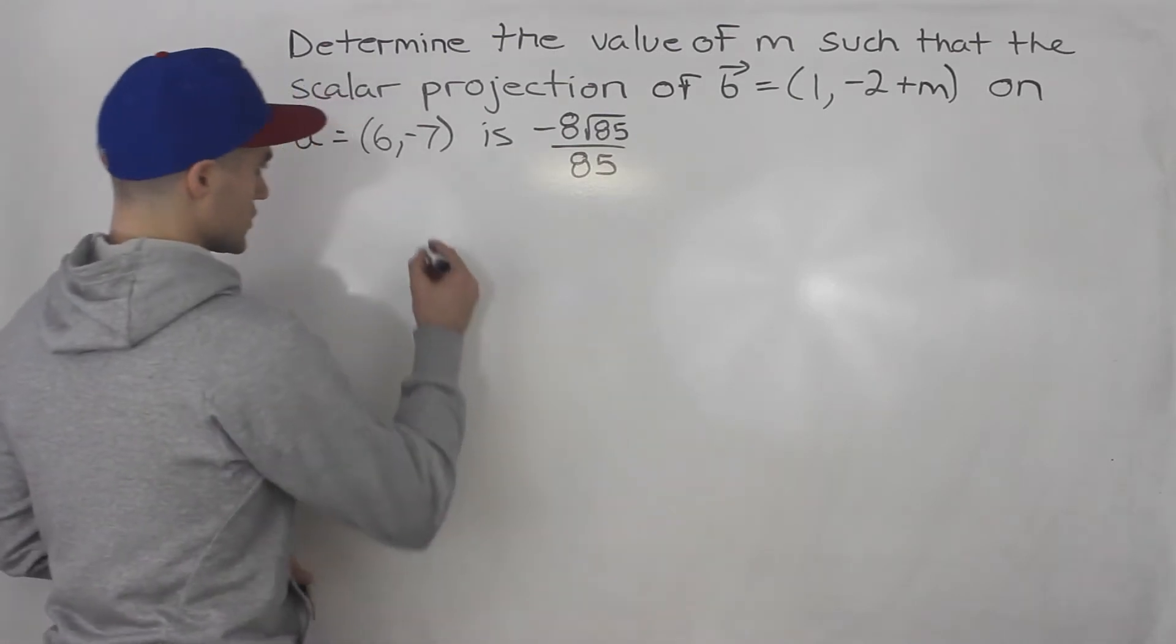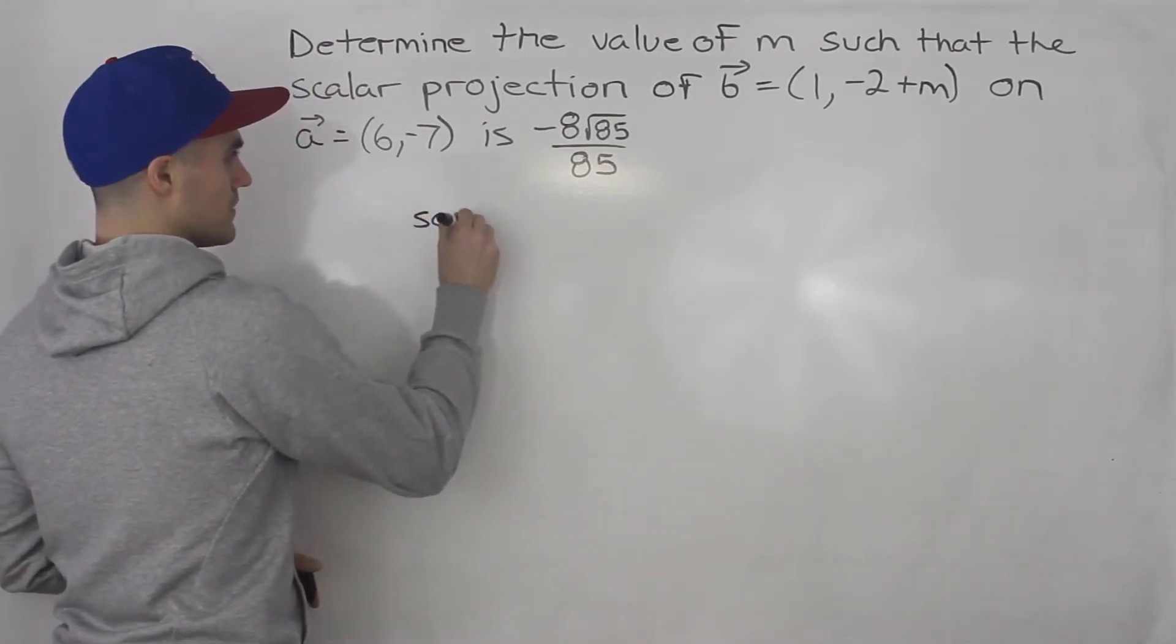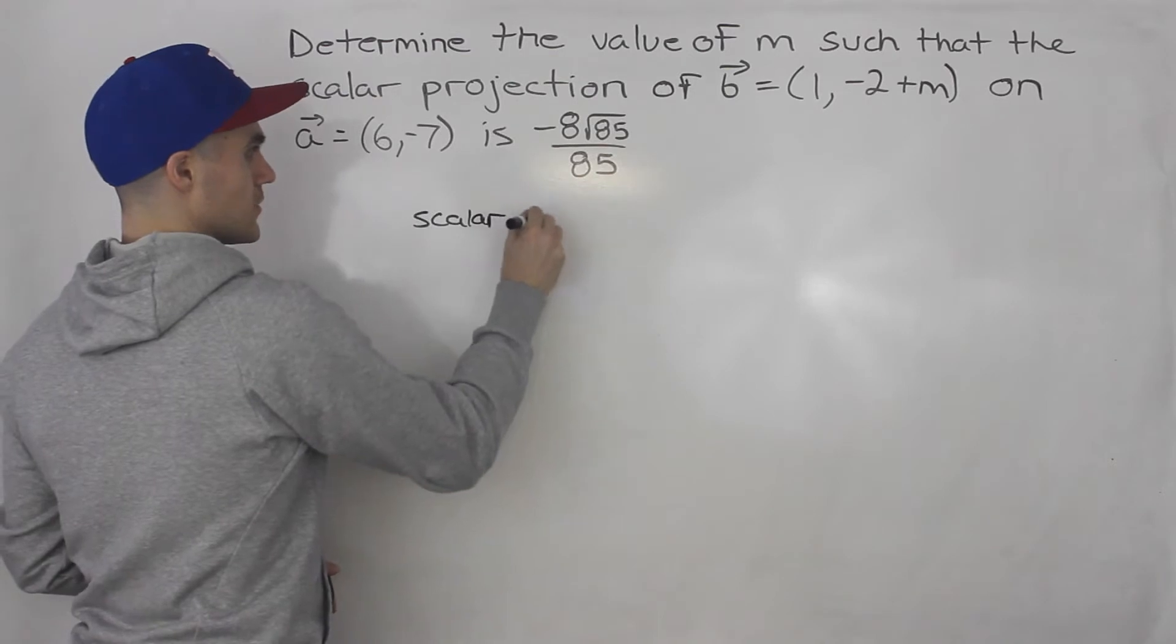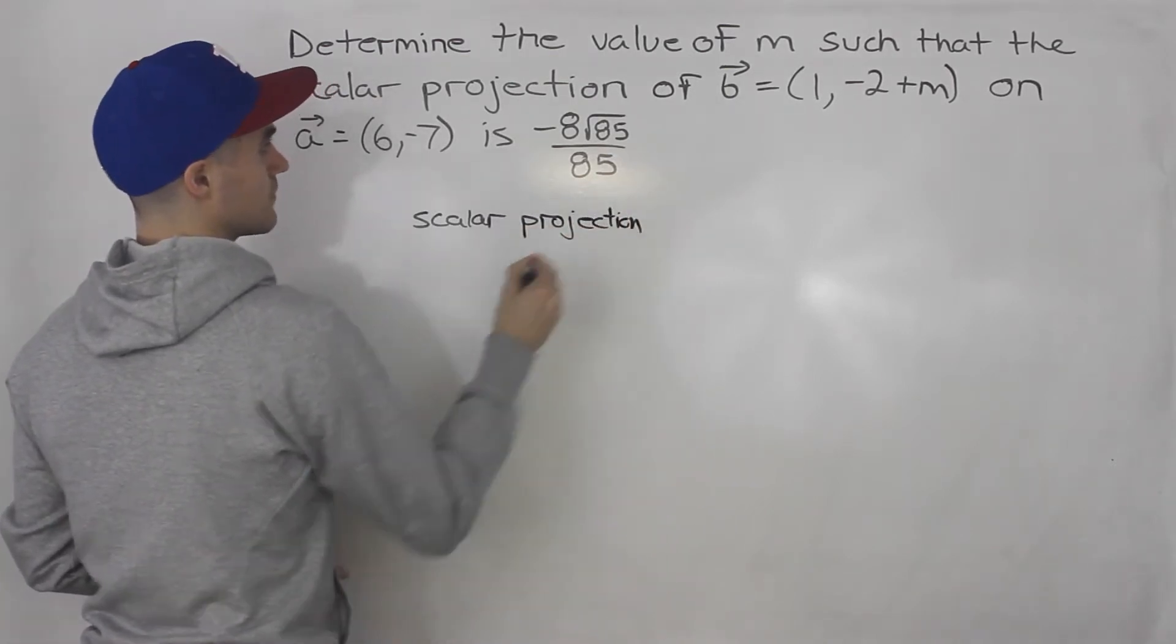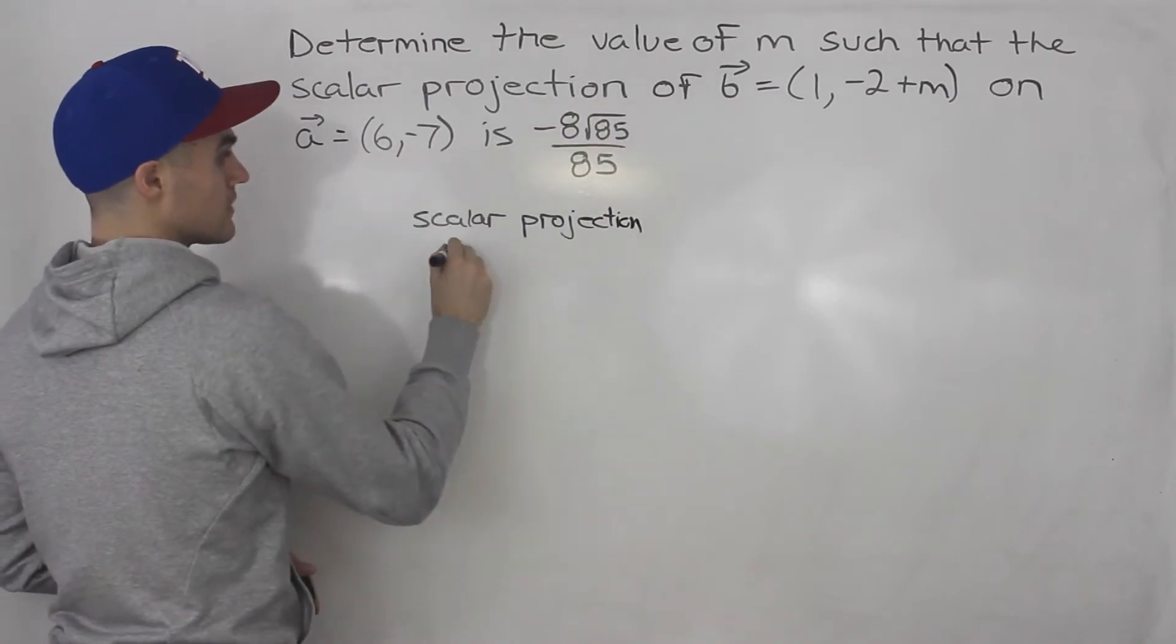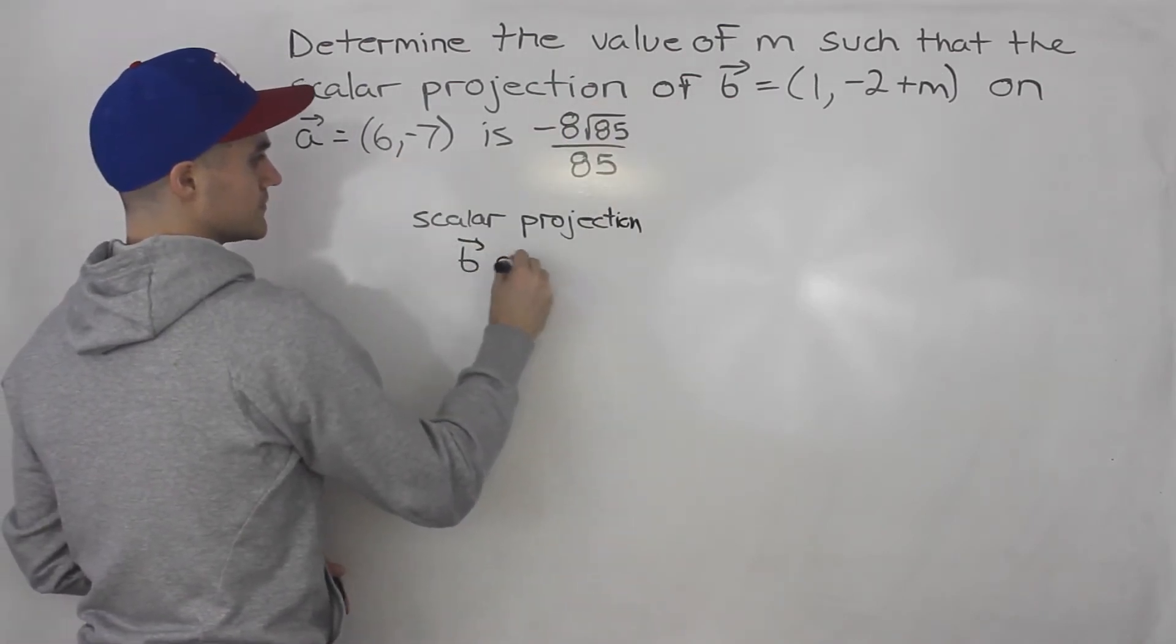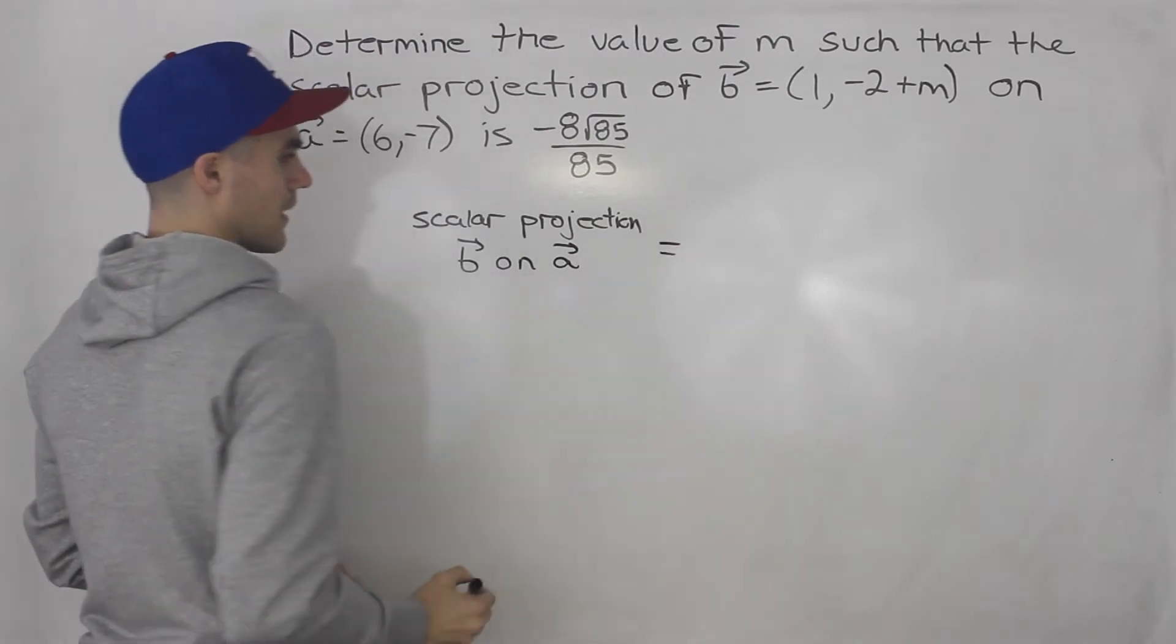This question is going to have quite a bit of algebra, but it's not too bad. We're working with a scalar projection of b on a. Well, what's the formula for that?